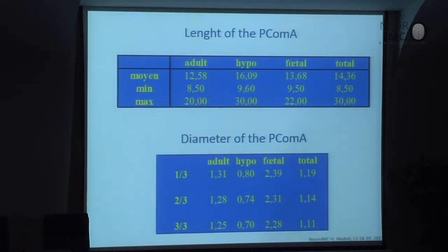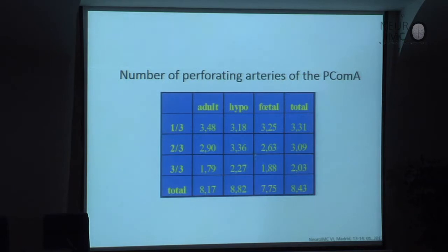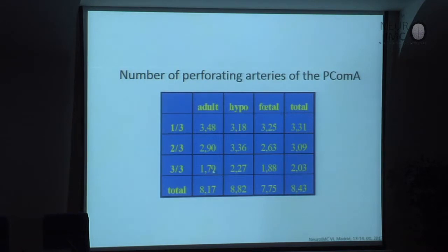Generally speaking, the length of the posterior communicating artery can vary from 8 to 20 millimeters, in some cases even 30 millimeters. The diameter of the anterior third of the artery is larger than the diameter of the second and third parts, which is important regarding surgical technique permitting section of this artery. Given the smaller diameter in the distal part, you should try to make the dissection of this vessel in the posterior part. The number of perforating vessels is usually about 8, with the larger number in the proximal third and the lesser number in the distal third — so the risk of damaging perforating vessels during section is less if done in the posterior third.